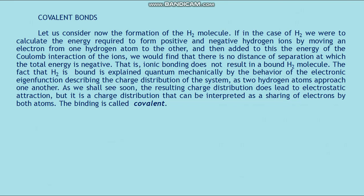The fact that H₂ is bound is explained quantum mechanically by the behavior of the electronic wave function describing the charge distribution of the system as two hydrogen atoms approach one another. The resulting charge distribution does lead to electrostatic attraction, but it is a charge distribution that can be interpreted as a sharing of electrons by both atoms. The binding is called covalent. We can best understand the covalent bond by considering first the simpler case of H₂⁺, the hydrogen molecule ion, where we have two nuclei each exerting Coulomb repulsion on the other and both exerting Coulomb attraction on the single electron.